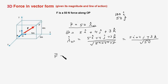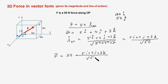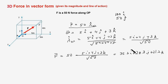We have the unit vector along line OP, so we can write the force vector F directly. F equals 50 times lambda_OP, which is 50 times (5i + 4j + 3k) divided by the square root of 50. This works out to 35.3i + 28.3j + 21.2k. And that's the answer.